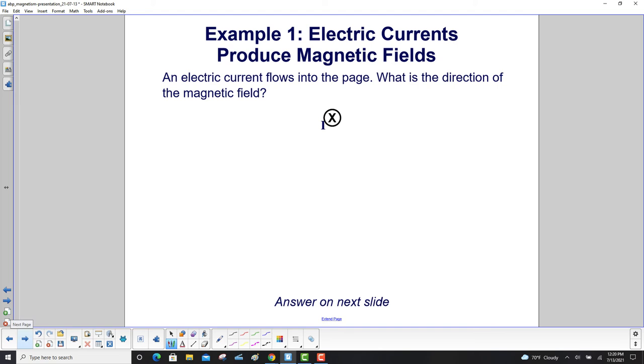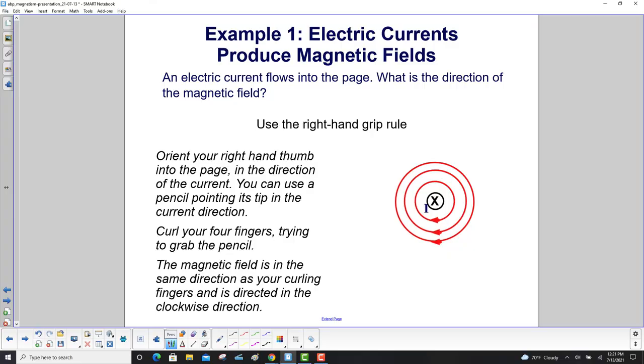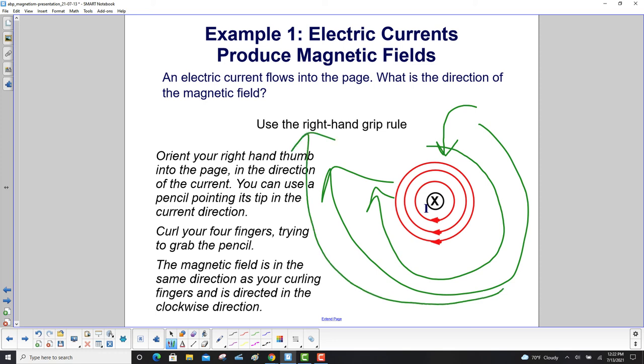Let's work a problem. Here we have an electric current flowing into the page - that's what the X means - and the i here shows that it's a current. What is the direction of the magnetic field? We'll use the right-hand grip rule. Orient your right thumb into the page in the direction of the current. The X means it's into the page. You can also use a pencil pointing its tip in the current direction, into the page. Curl your four fingers trying to grab the pencil. The magnetic field is in the same direction as your curling fingers, which should be in the clockwise direction. You would draw several circles around the current going into the page because you have a magnetic field that keeps curling around a number of concentric circles.